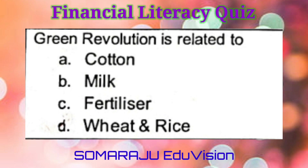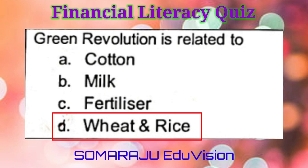Question number six: Green Revolution is related to A. Cotton, B. Milk, C. Fertilizer, D. Wheat and Rice. The correct answer is D. Wheat and Rice.